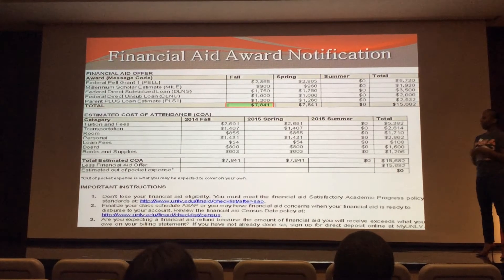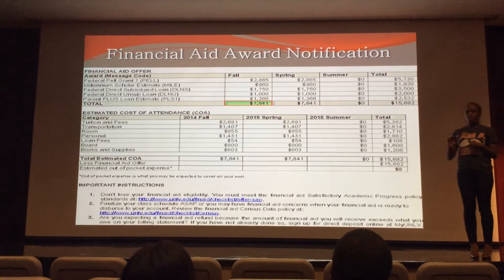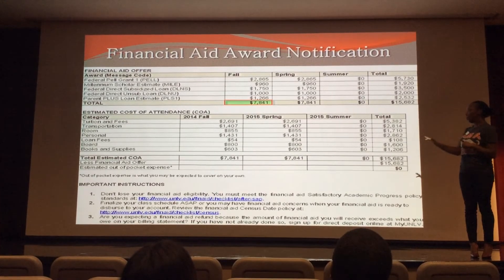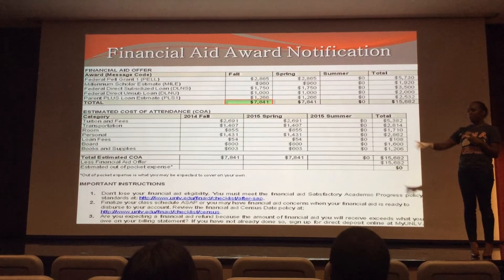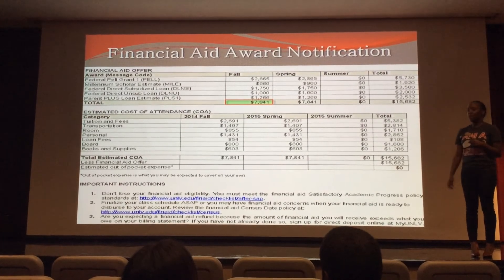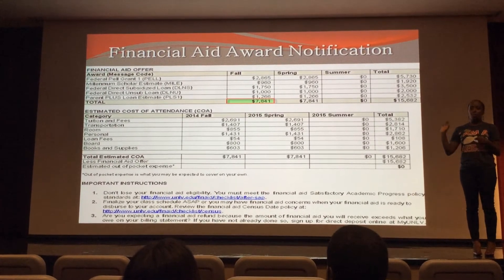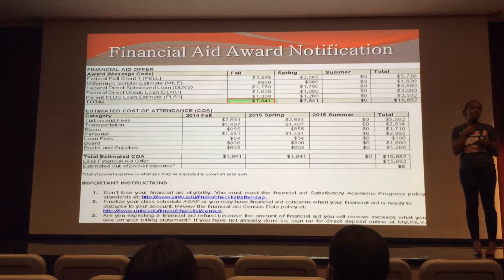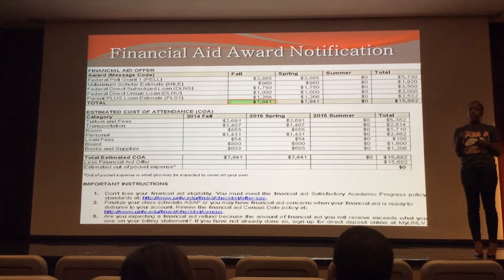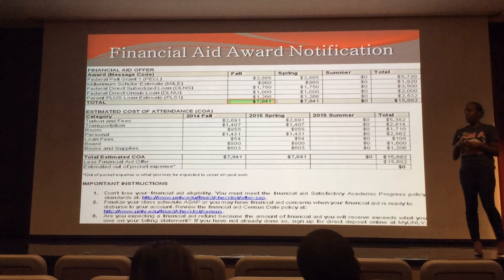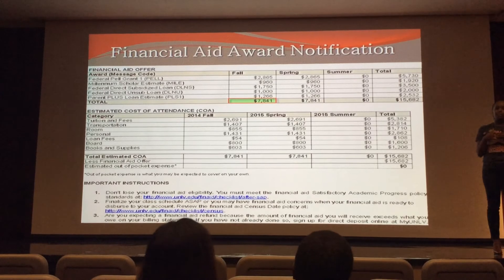Underneath, you see the cost of attendance. This is not an actual cost — it isn't really going to cost a student $15,000 to come here. It's an estimate that takes into consideration all the factors that go into being a student. With that cost of attendance, it lets our office know the maximum amount of financial aid we can award your student. You'll see that their cost of attendance and their offer match.